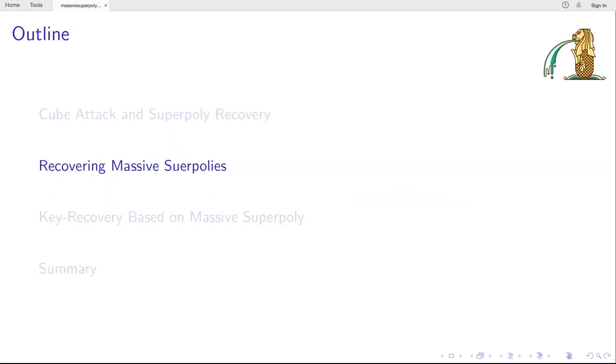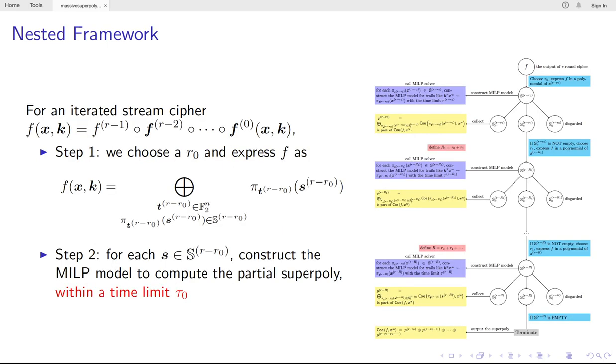In this paper, we give an efficient framework with nested usage of the monomial prediction. Provided the output bit of a certain round of a stream cipher, we first choose a positive number R_0 to expand the output bit to the intermediate states after R minus R_0 rounds. In other words, the output bit will be written as a polynomial of the states after R minus R_0 rounds. All the monomials are pushed into the set S_2^(R-R_0).